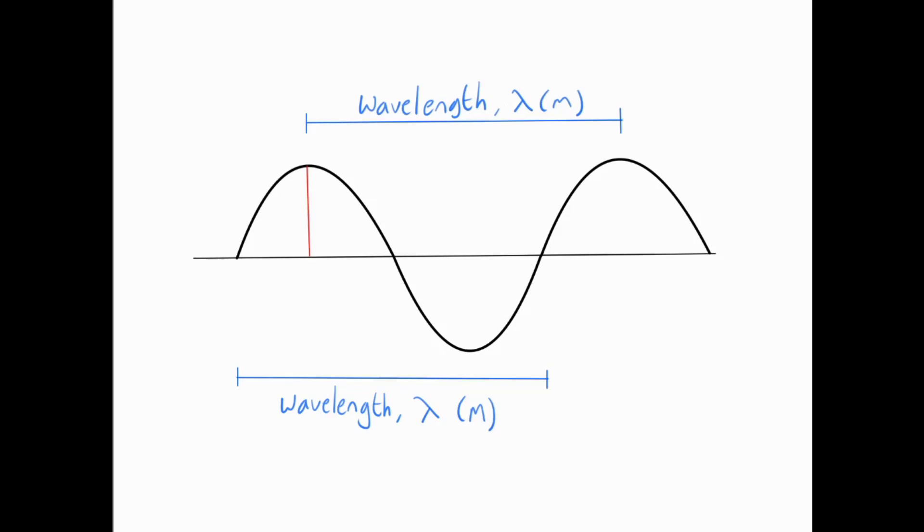Now what else we need to have a look at is this particular measurement here. The measurement from the crest of the wave down to that centre line or from the trough of the wave up to that centre line. It's basically the maximum displacement of any particle in that wave. How far it deviates from this middle line. That is called the amplitude. It's usually given the symbol capital A and it's going to be measured in meters or in centimeters.